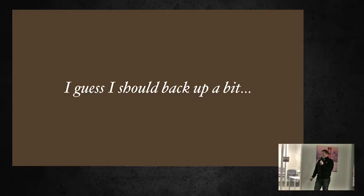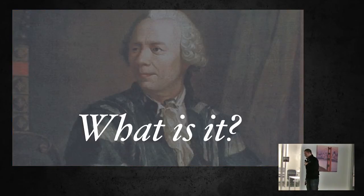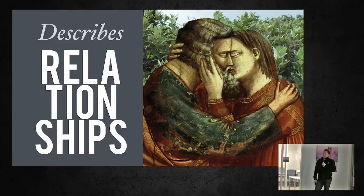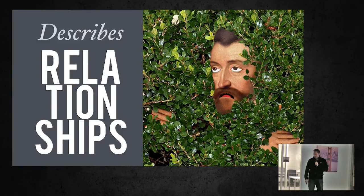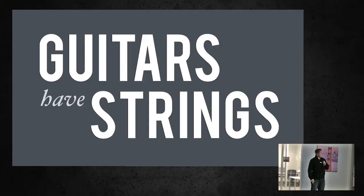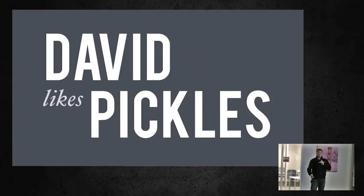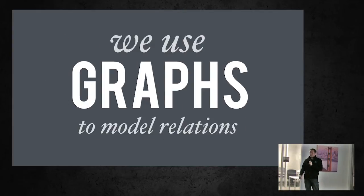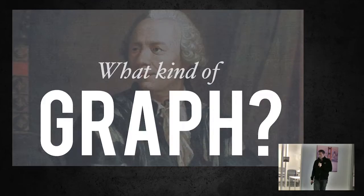I should back up just a little bit here. What is graph theory? It is something that describes relationships. For example, guitars have strings and David likes pickles — these are relationships. These things are related to each other, and we use graphs to model these relationships.